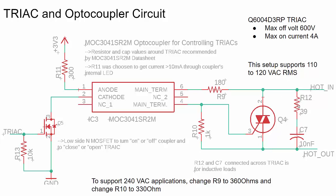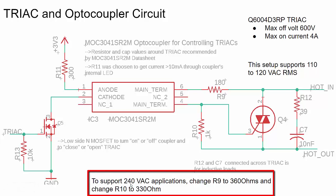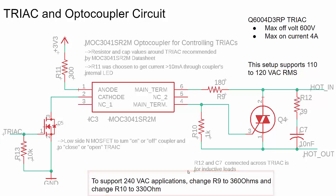The optocoupler also recommends a resistor-capacitor snubber network for highly inductive AC loads to help keep current and voltage in phase. All these values came from the datasheet for the opto-isolator. My implementation targets 110–120V AC line power, but the datasheet also provides guidance for 240V applications — for 240V you would change R9 to 360 ohms and R10 to 330 ohms.